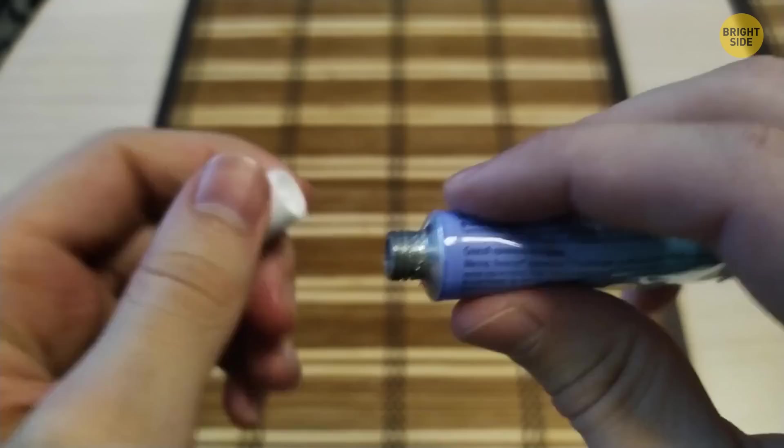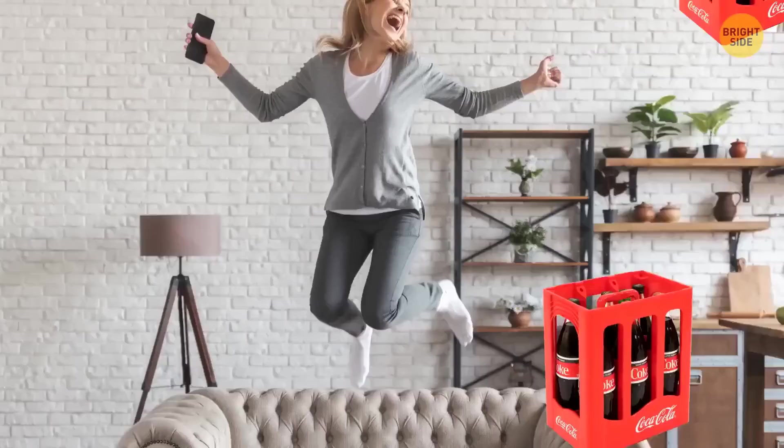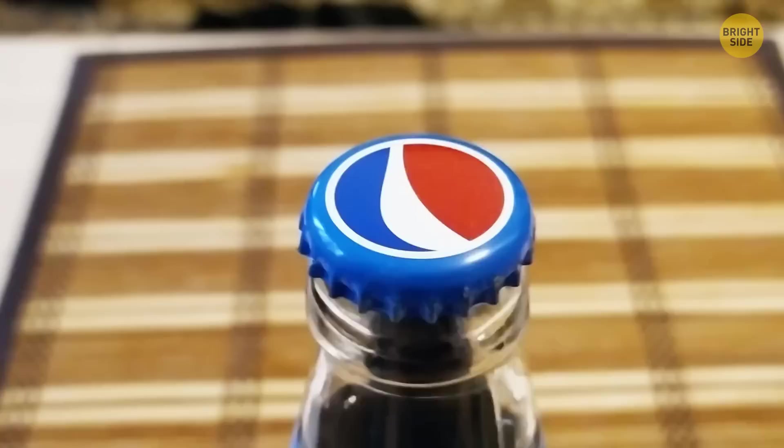The tiny rubber disc under every bottle cap isn't just for seeing if you want a lifetime supply of soda. It's what keeps your drink all nice and bubbly. The lid keeps the liquid inside. The rubber disc keeps the gas inside. Until you drink it.